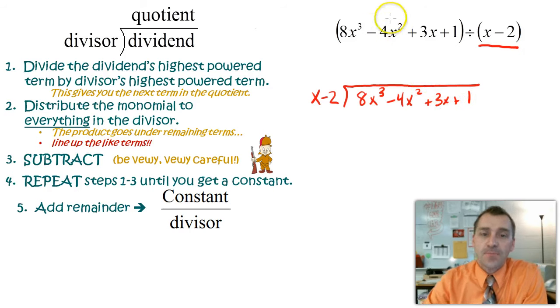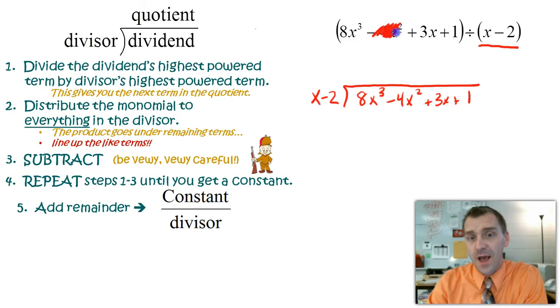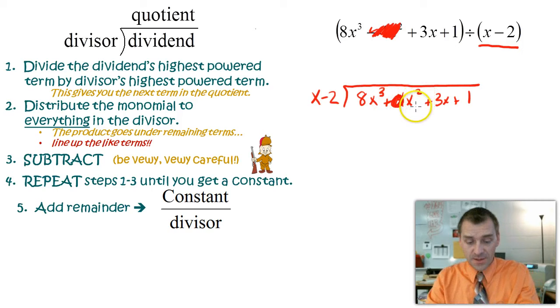Side note right here, guys, if there happens to be a missing term, you still need to allot for, just like when we did synthetic substitution, you still need to allot and hold that spot. So you put a zero in there for that. If it's like, say, for example, it was missing this entire term. It didn't have like a negative x squared. You'd have to put that in here. You'd have to put zero x squared. You'd have to still hold that particular spot.